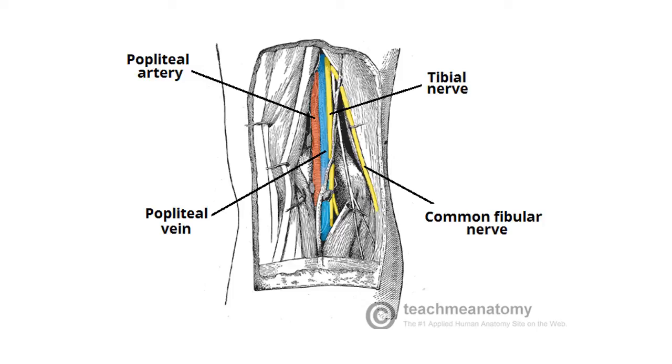Also within the popliteal fossa, the small saphenous vein, a superficial vein of the leg, empties into the popliteal vein.